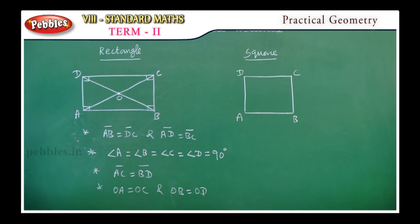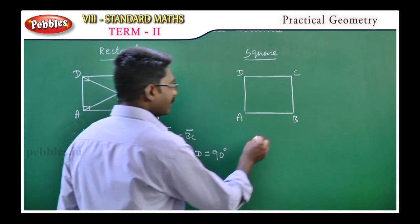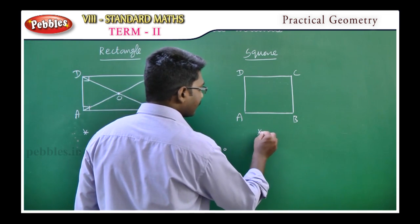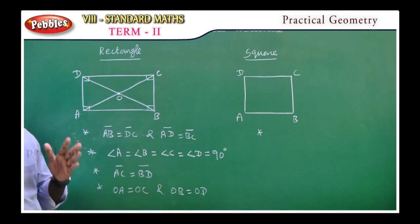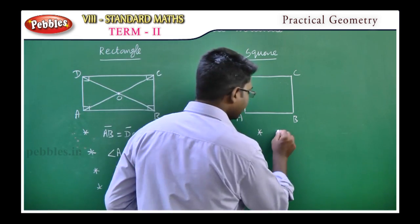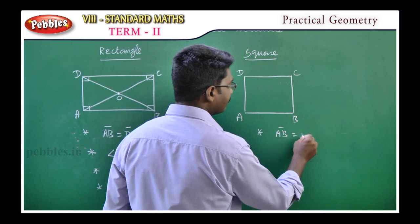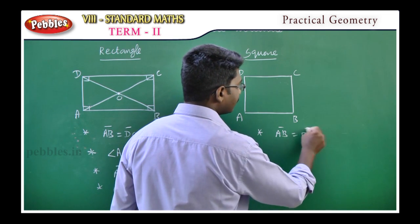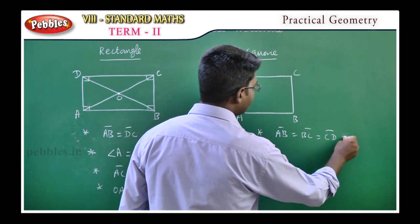That is the rectangle property. Now, the square property. First property: all the sides are equal in length. That is, AB equals BC equals CD equals DA.